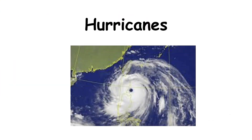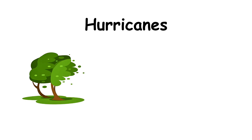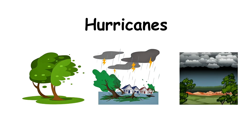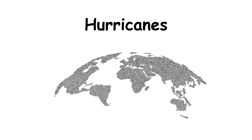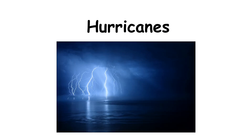Hurricanes. A hurricane, also known as a typhoon or tropical cyclone depending on the region, is a powerful storm system with strong winds, heavy rain, and low atmospheric pressure. These storms form over warm ocean waters and can grow into massive, destructive weather systems. Hurricanes are most common in the Atlantic and eastern Pacific oceans, while typhoons occur in the western Pacific. Both can affect coastal regions and islands around the world.